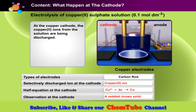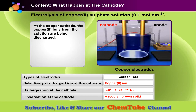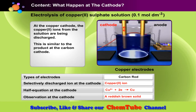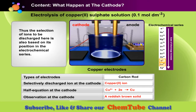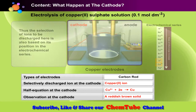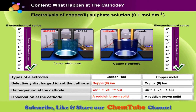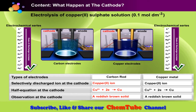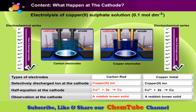In this setup where copper metal is used as an electrode, copper ions are being discharged. The product is similar to the carbon cathode used previously. Thus, the selection of ions to be discharged here is also based on its position in the electrochemical series. So in both cases — where carbon and copper are used — the same factor applies: the position of ions in the electrochemical series will determine the products at the cathode.